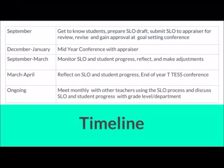Here is a quick timeline to help you see the year at a glance. In September, you're getting to know your students academically, seeing where they are with the skill statement, and continuing to work on your SLO draft to bring to your administrator for the beginning-of-year conference. In December or January, you'll have your middle-of-year conference with your appraiser and continue checking in with and assessing students. Then in March or April, you'll reflect on the SLO and the progress of each student and have your end-of-year T-TESS conference. Keep in mind it is expected that you are meeting with other teachers going through the SLO process, discussing it, monitoring student progress with your team and administrator, to ensure all students are meeting their goals.